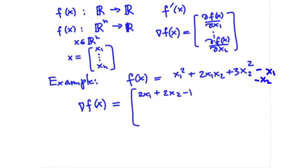We are talking about −x₁ and −x₂ as the linear terms. The first-order derivative with respect to x₂: for the x₁² part it is 0, for the 2x₁x₂ part it is 2x₁, for the 3x₂² part it will be 6x₂, and for −x₂ it is −1. So this is our gradient for this function.